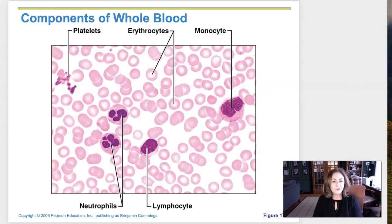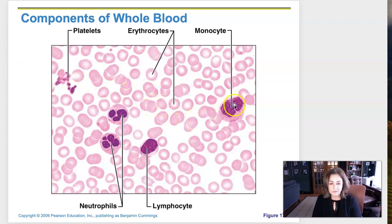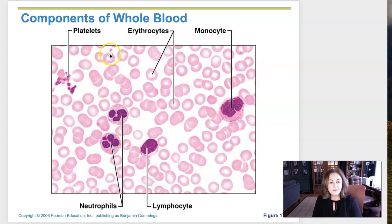Jumping over to my PowerPoint, this is a photo of a blood smear from the book. You can see the erythrocytes all over, and the leukocytes — hopefully you know how to differentiate one type from another. And then platelets are these little dot-looking things, and here's a whole cluster of platelets.